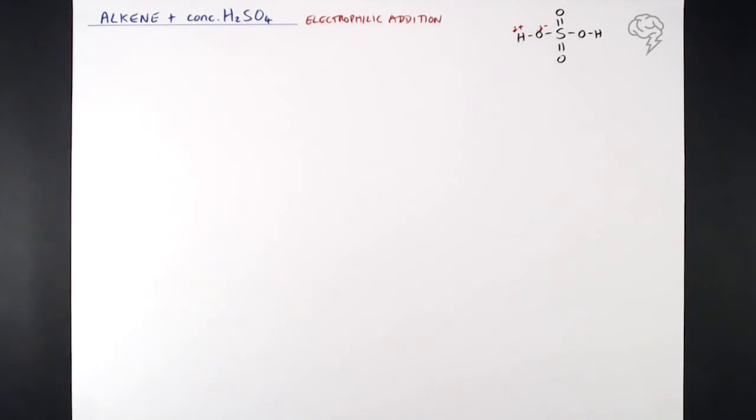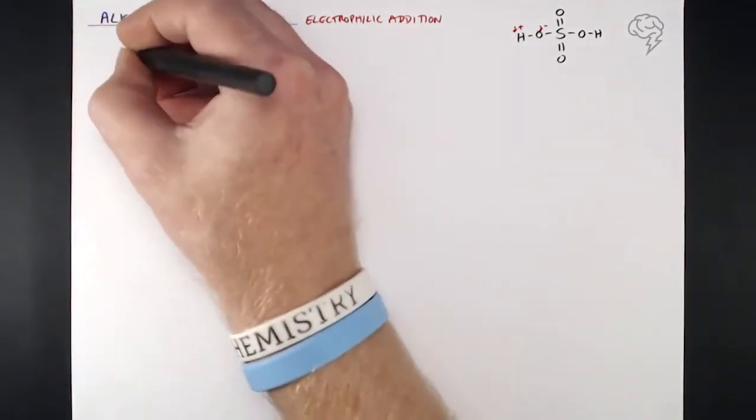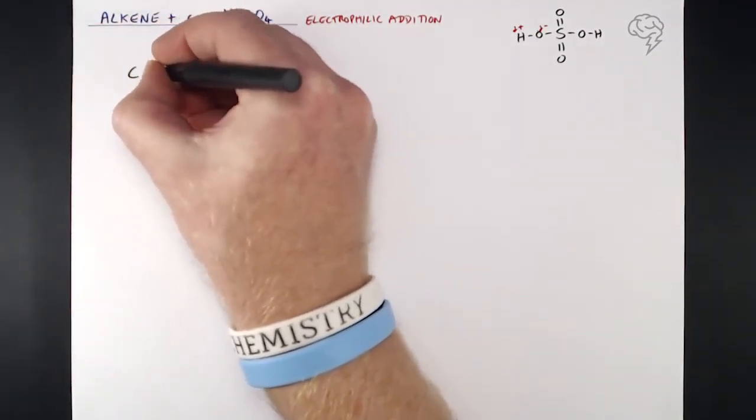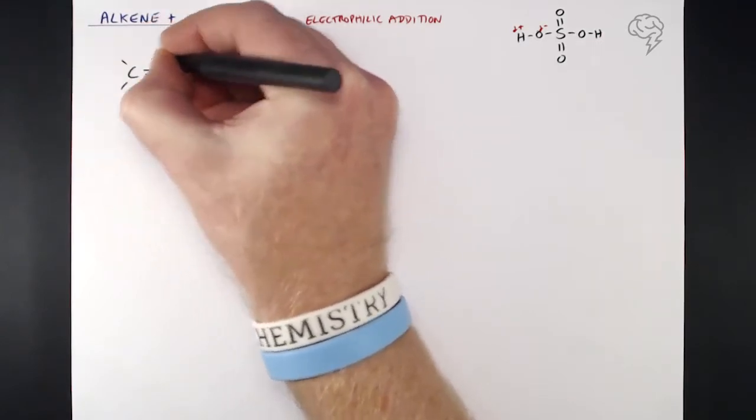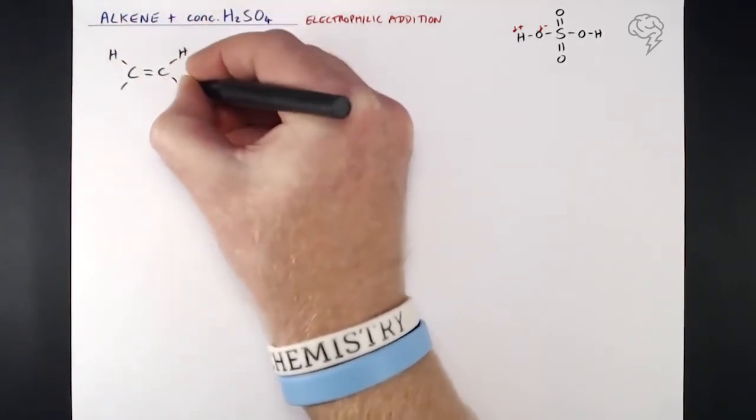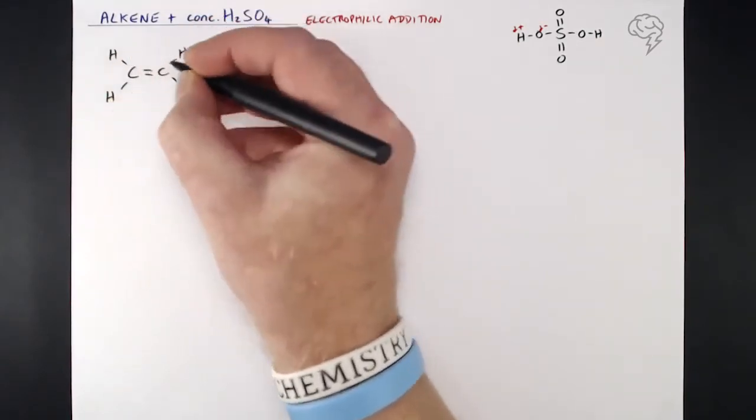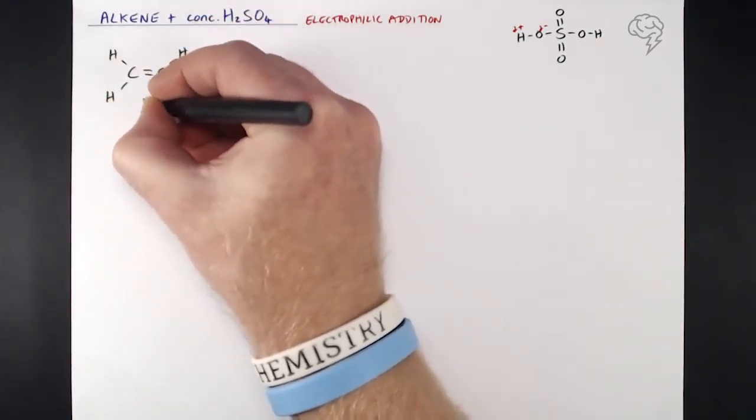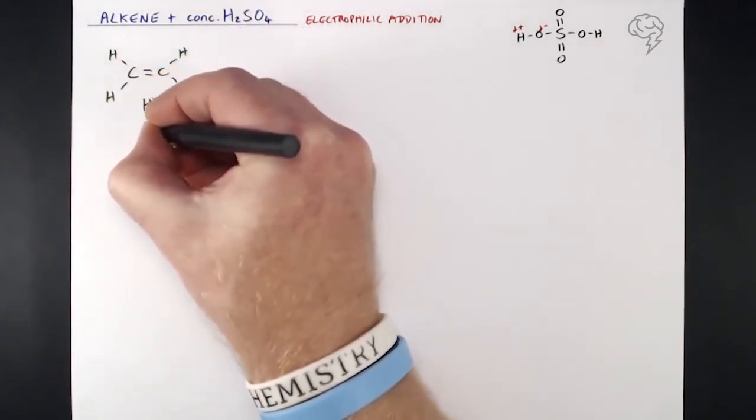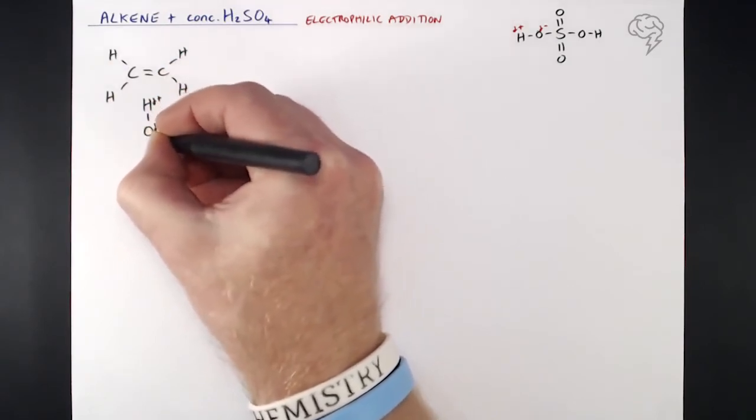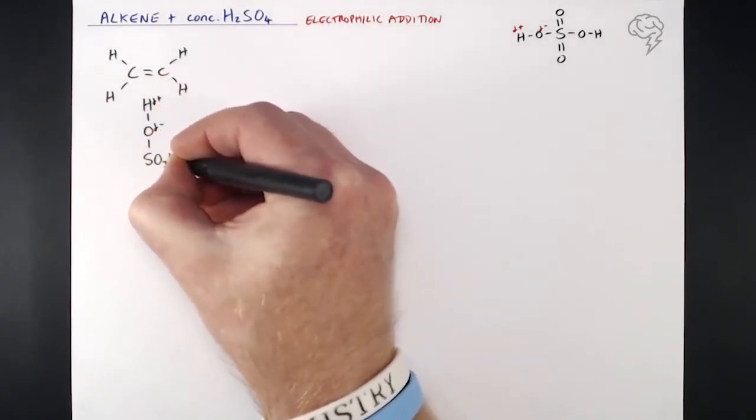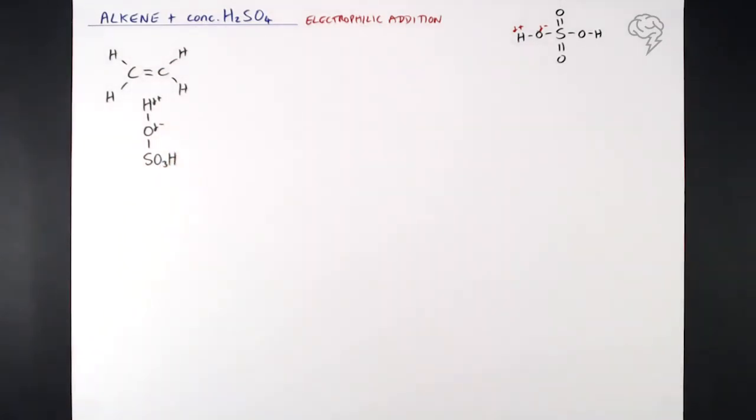So just setting up our first diagram of our mechanism, I'm going to set up ethene. Now that double bond of course is the main player in this process. Underneath I'm setting up what looks very weird, but I'm focusing on the electrophile - the H delta plus and the O delta minus - and then underneath what we've got is the rest of that sulfuric acid molecule, SO3H. So it looks a bit weird in the way I've set it up, but that is obviously the molecule of sulfuric acid.